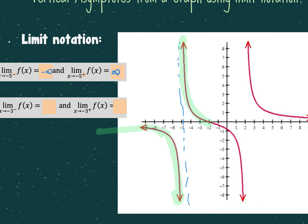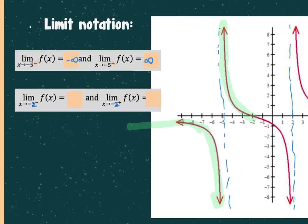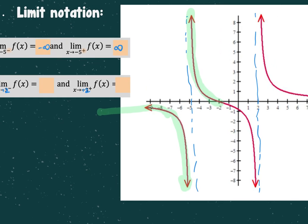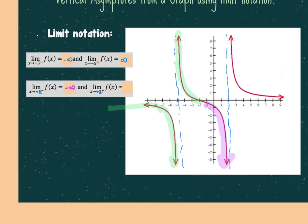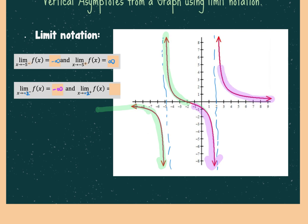Now repeat that whole process for the other vertical asymptote at positive two. As you're approaching positive two from the left, what's happening with my y values? Decreasing without bound — negative infinity. And as it's approaching positive two from the right hand side, the y values are increasing without bound — positive infinity.